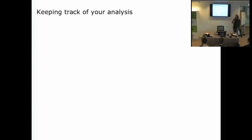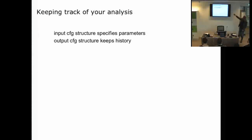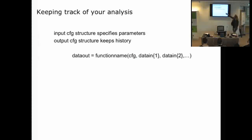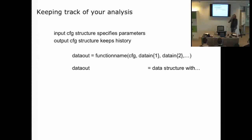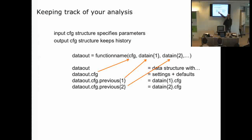The idea is that in using the Fieldtrip toolbox, you glue together small pieces of code and run them as a script. The input configuration specifies the parameters for the algorithm, and crucially, the output data structure also contains an output cfg that stores the history of what was done — so you can always look at the result and trace where the data came from. The output cfg even contains the previous cfg, meaning on the basis of the output data you can reconstruct the entire analysis chain.